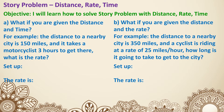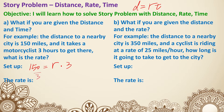Let's look at some simple examples. Question A: what if you are given the distance and time? For example, the distance to a nearby city is 150 miles, and it takes a motorcyclist three hours to get there. What is the rate? Using D equals R times T, we set up 150 equals R times 3, then divide both sides by 3. We get the rate as 50 miles per hour.